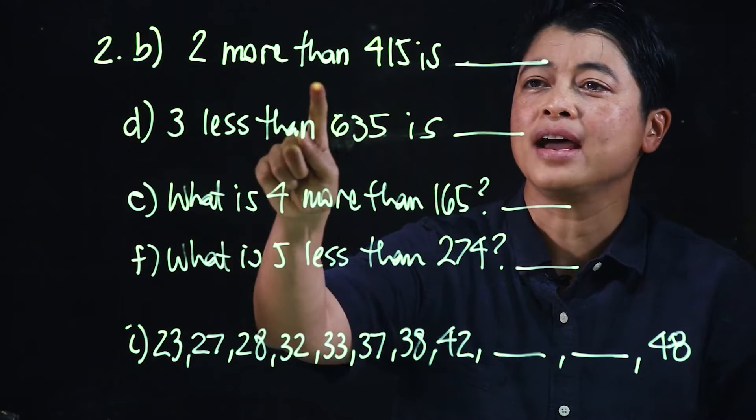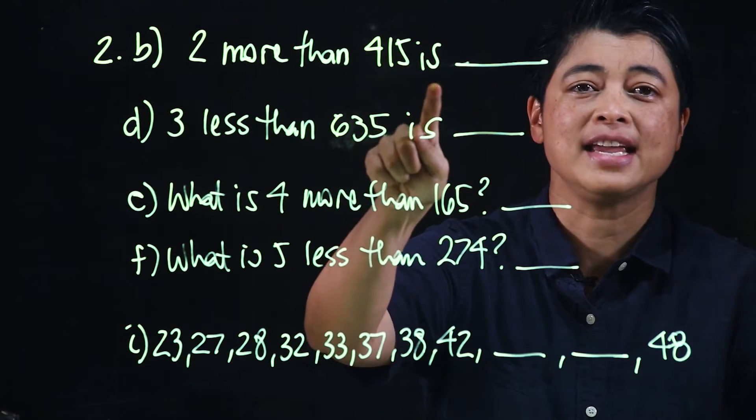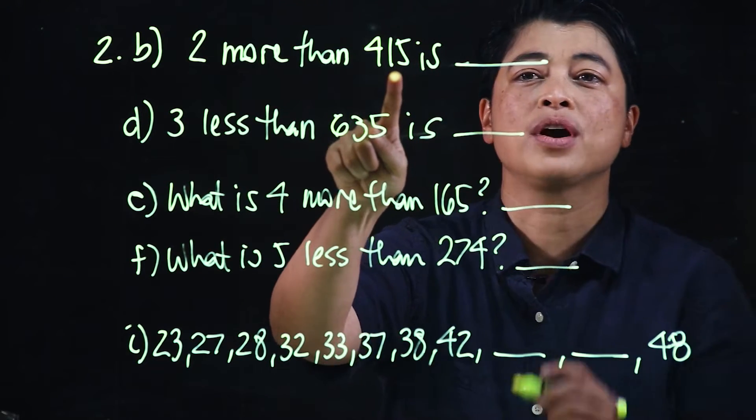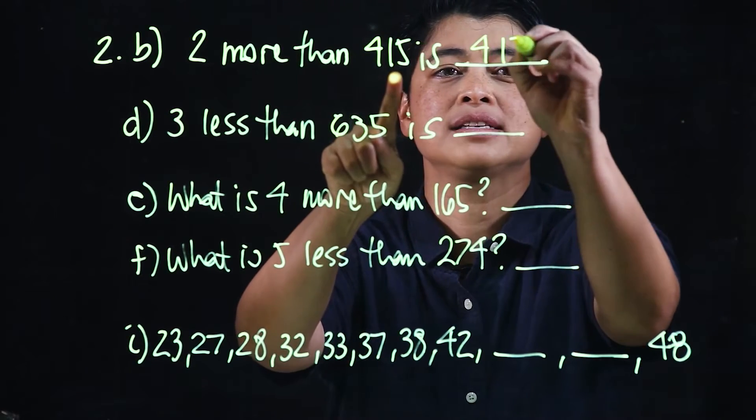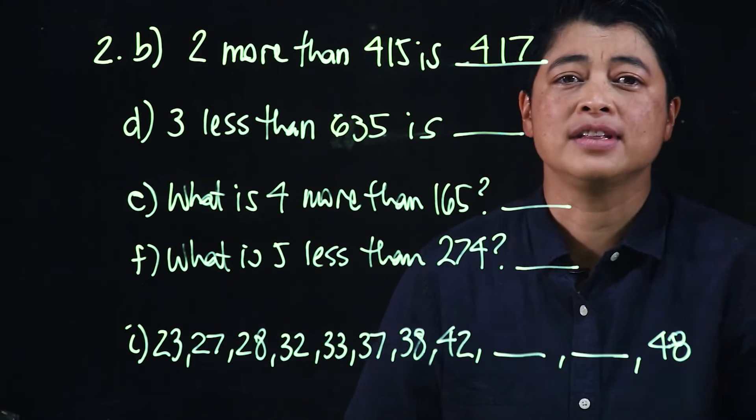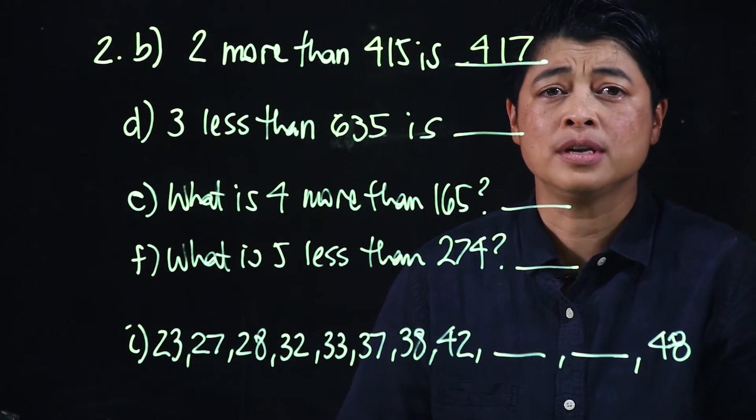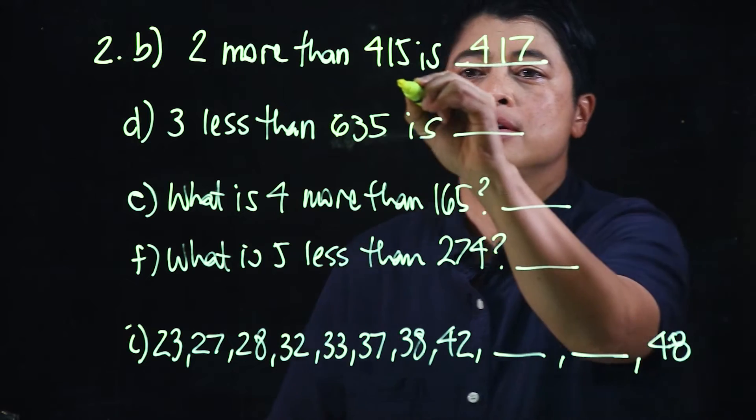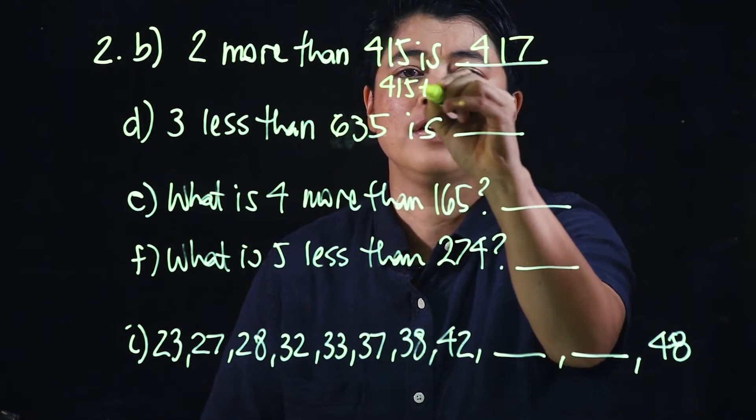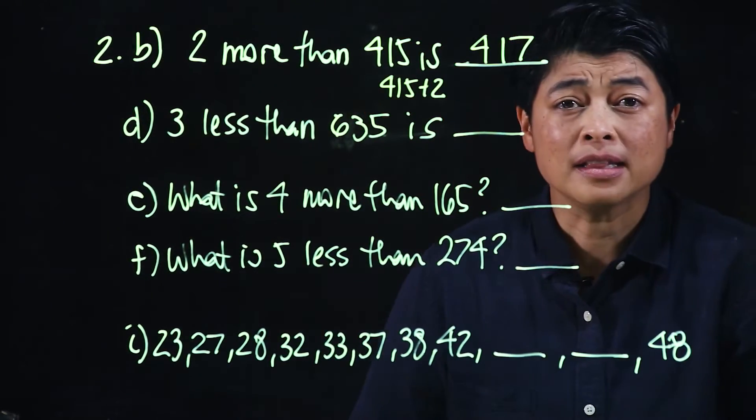So, 2 more than 415 is... we're adding 2 to 415, so that makes it 417. If it helps to write it down, it's better to write down 415 plus 2. But if they can do it mentally, then it's also better that they do mentally.